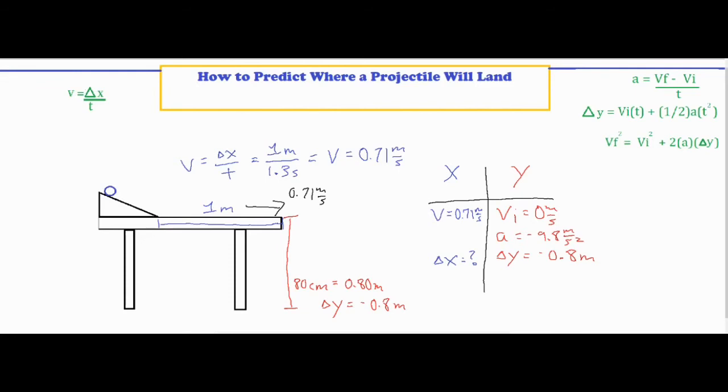Second of all, when it leaves the table and it's in free fall, we always have our free fall acceleration of negative 9.8 meters per second squared. And we went ahead and measured the height of the table and that gave us a delta y of negative 0.8 meters because it's displaced downward from its position leaving the end of the table.